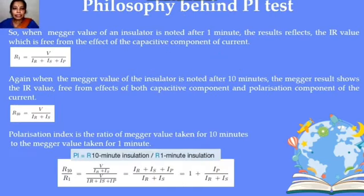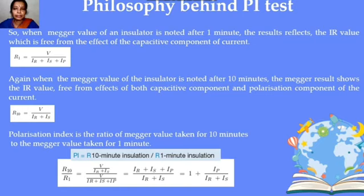When the insulation resistance value is noted after 1 minute, the resistance R1 is given by V divided by (IR + IS + IP). If measured after 10 minutes, R10 is given by V divided by (IR + IS). The first value is termed R1 (at 1 minute) and the second R10 (at 10 minutes).